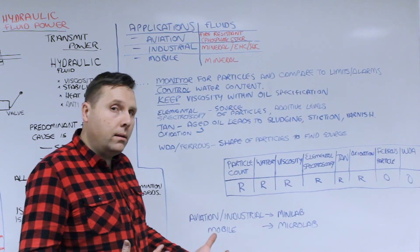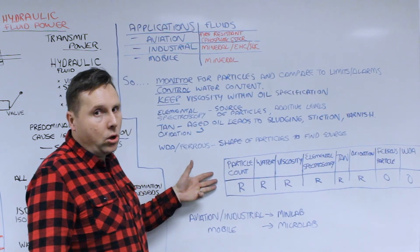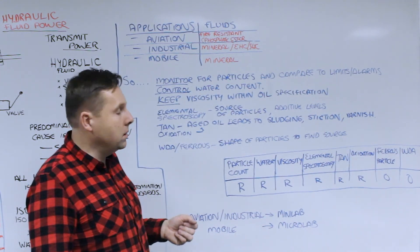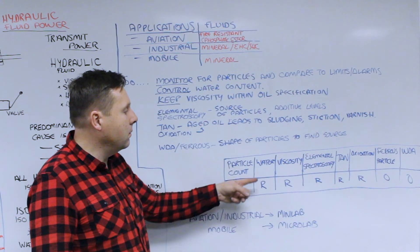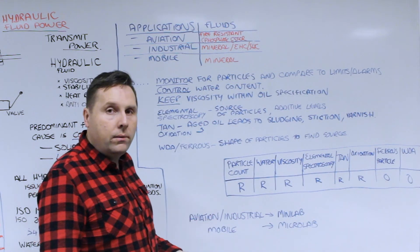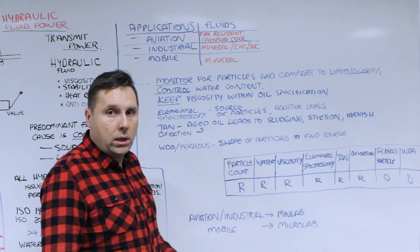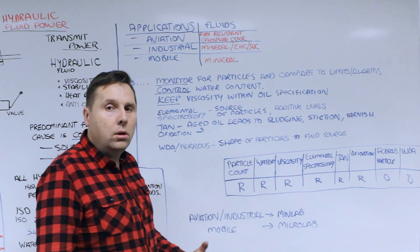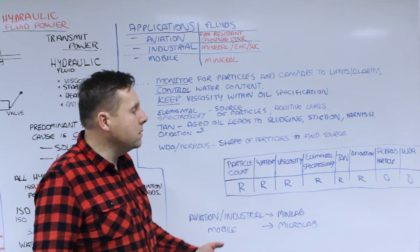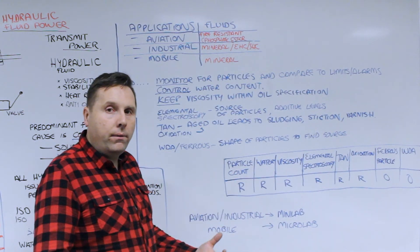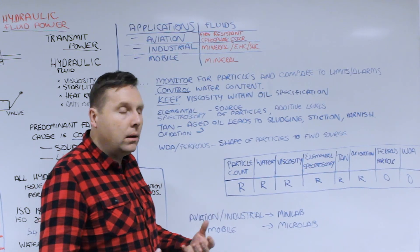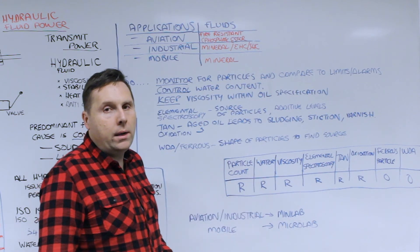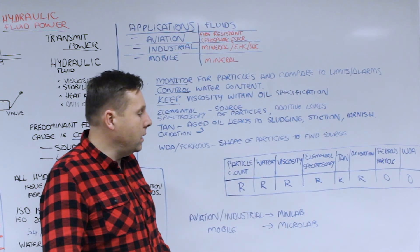So what are the best tests that we should do? Particle count always on any hydraulic system. Cleanliness is next to godliness when it comes to the quality of hydraulic systems. Always do a water analysis to determine the level of moisture content. Always check the viscosity to make sure you've got the right product. Do an elemental wear analysis to look at the source of the particulate that's present. Acid number and oxidation to identify the level of breakdown that's present and if the oil is still fit for use. And then ferrous particle or wear debris analysis as an option for root cause analysis.